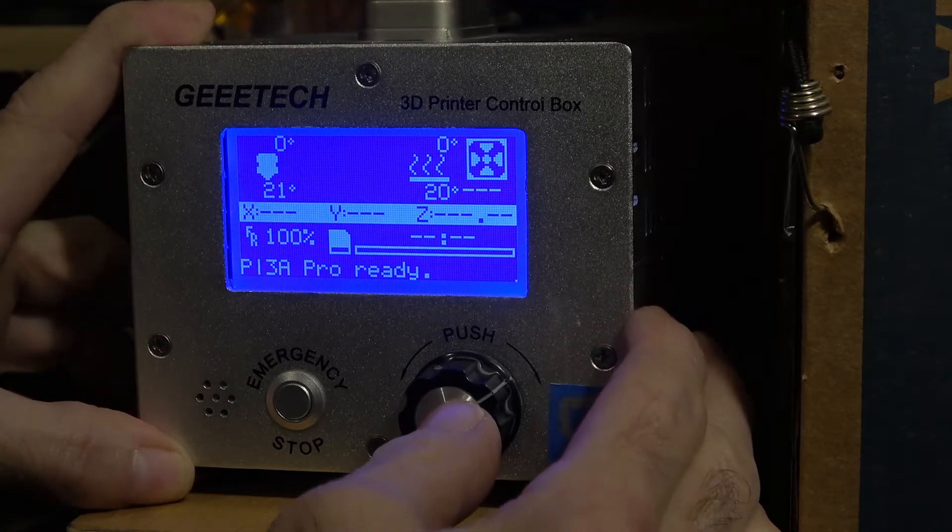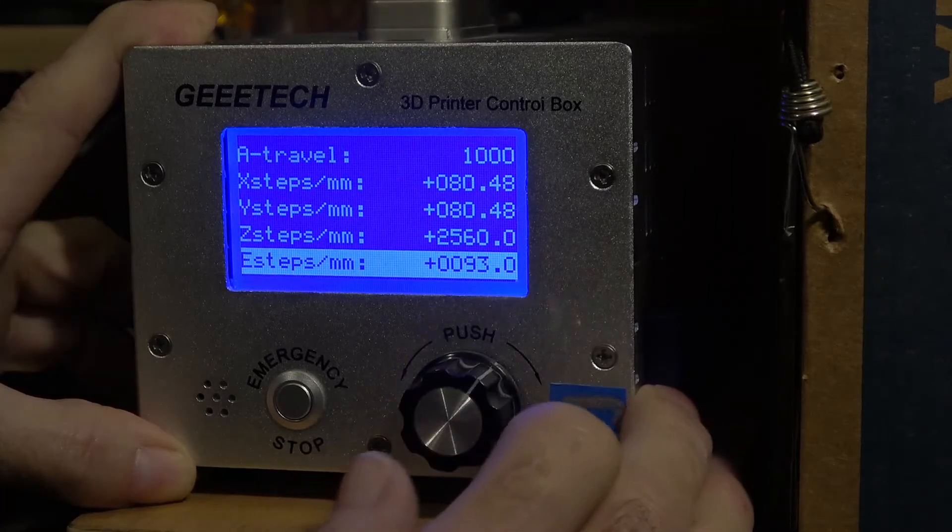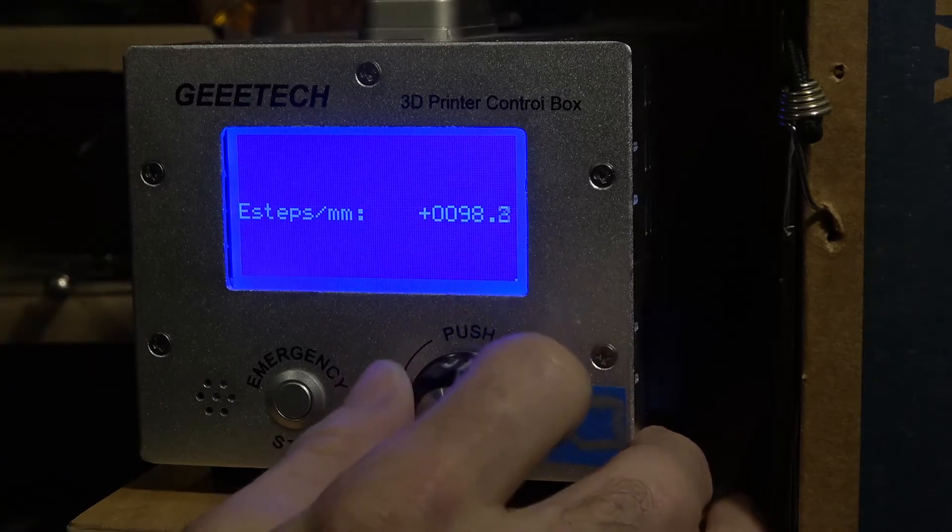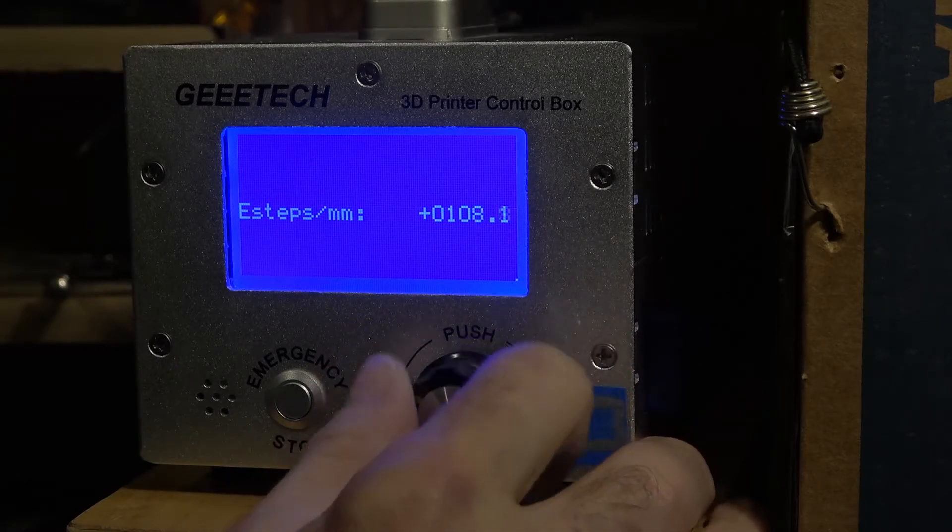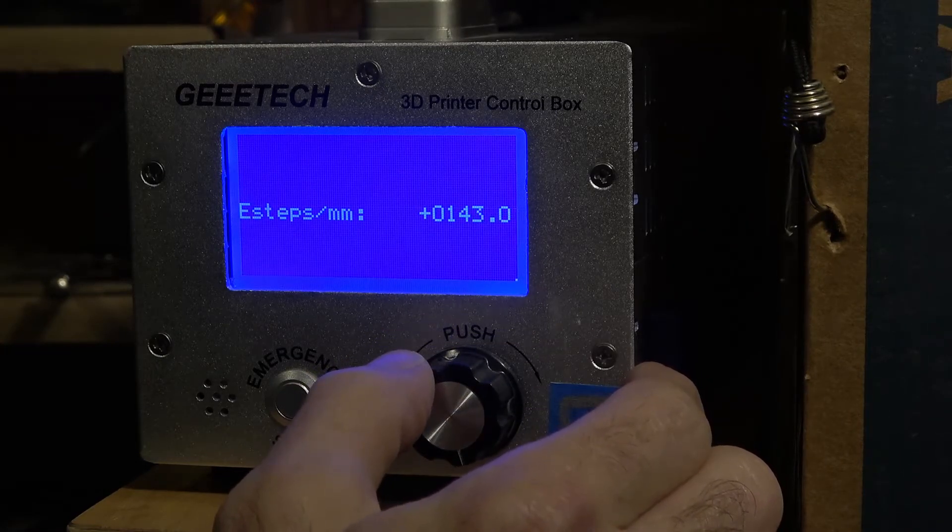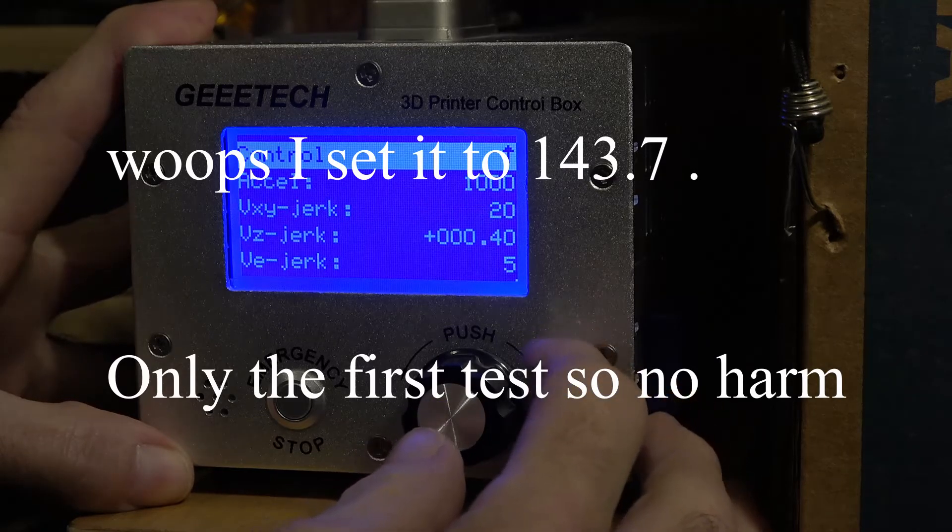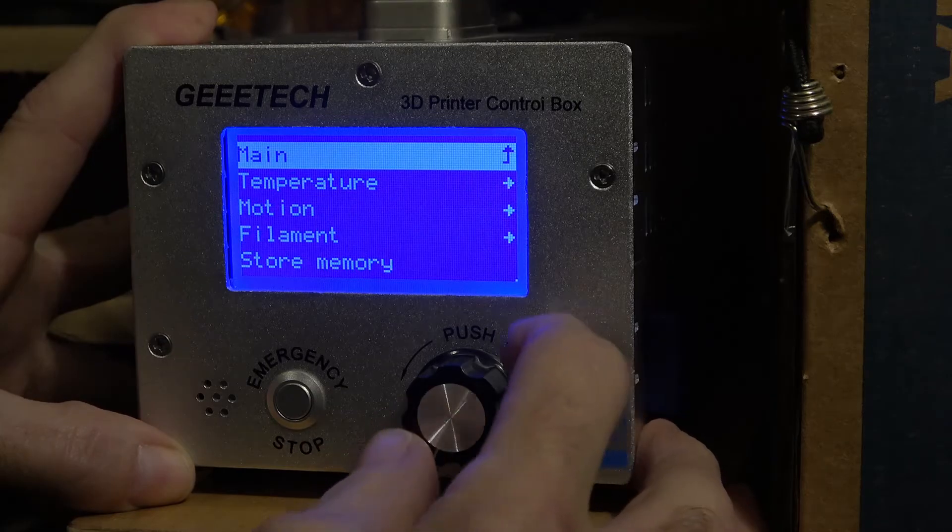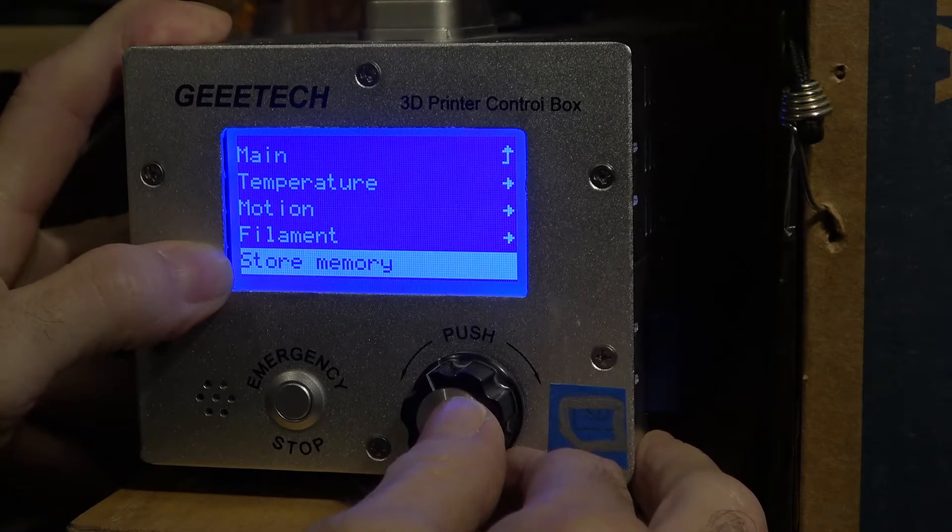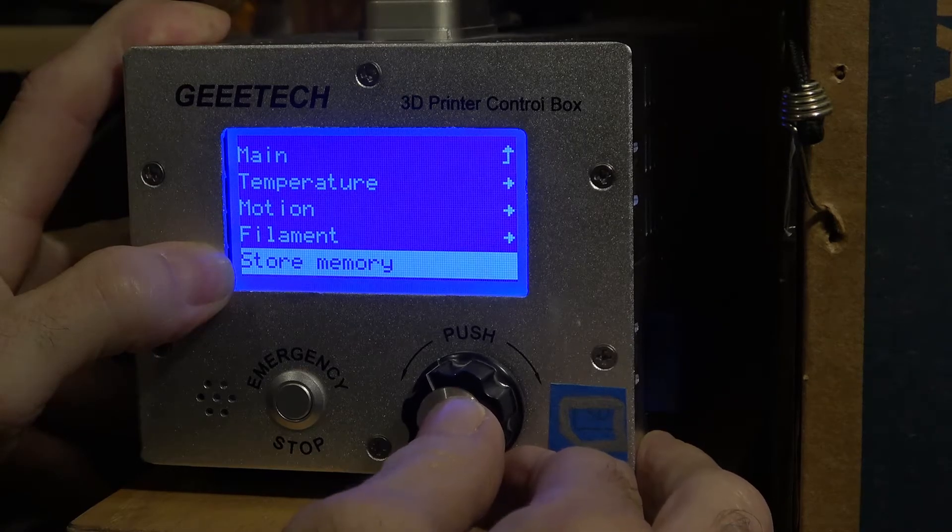After you've done your math for your new e-steps, go back into control, motion. This is all the way on the bottom. On this one, click, change it from 93 to 143.07. Go back to control. Make sure you click store memory, otherwise you turn it off and turn it back on, it'll be back at the 93. I did repeat the 100 millimeter test a couple of times and I believe I ended up right at 145 for my e-steps.